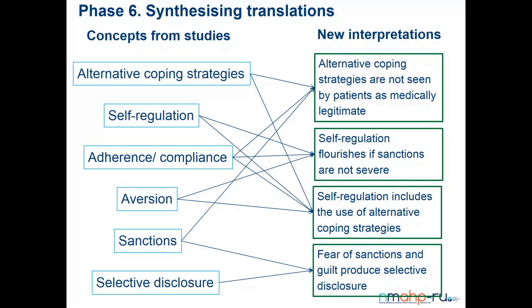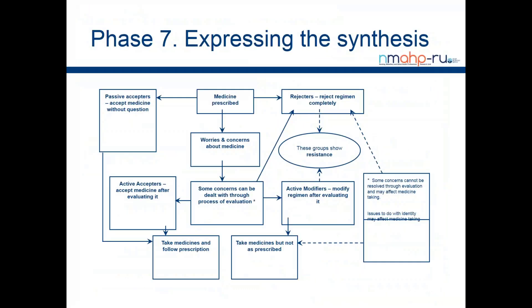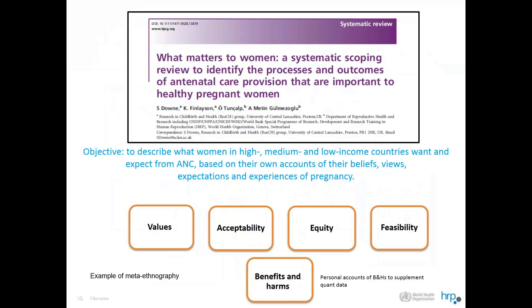In many qualitative evidence syntheses you have an expert group — including patients and consumers — to take your findings to. You need a big review team and must make sure you've got all the resources in place, as these reviews are expensive. The final theory they came up with explains why people do or don't take their medicines — why people reject their medicines, take them as prescribed, or become passive acceptors without question — all informed by the evidence but a completely new interpretation not found in any individual paper.